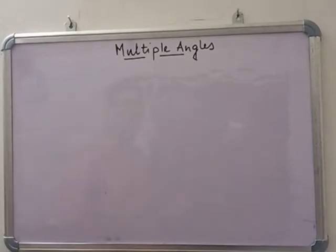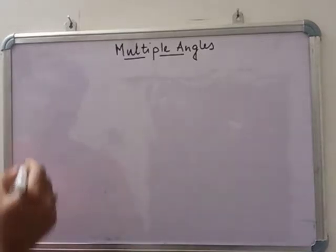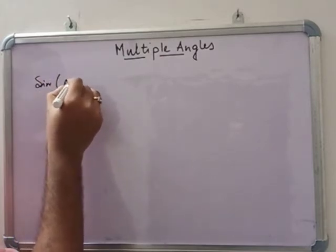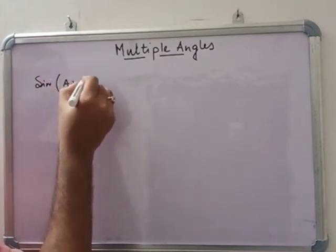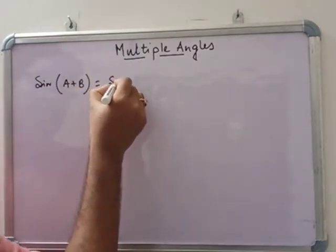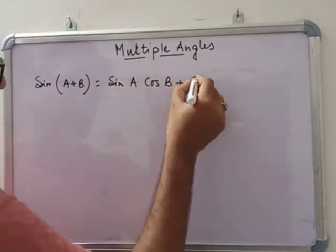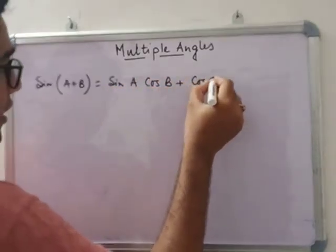Today we are going to discuss multiple angles. Previously we discussed compound angles, from which we can write: sin(A + B) = sin A cos B + cos A sin B.